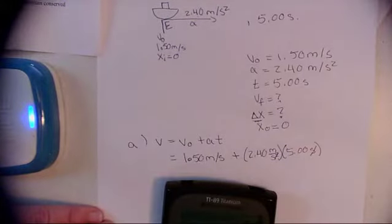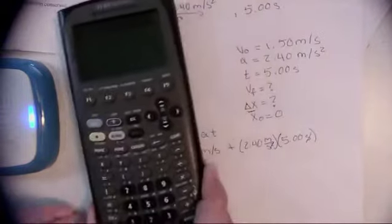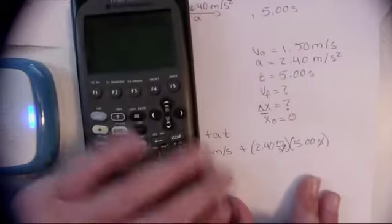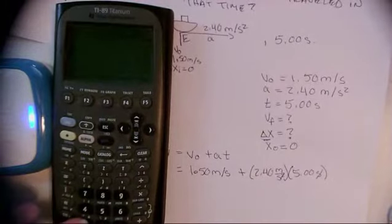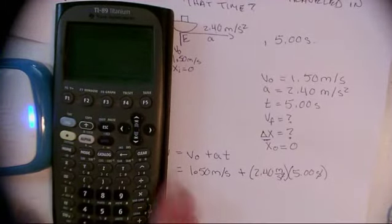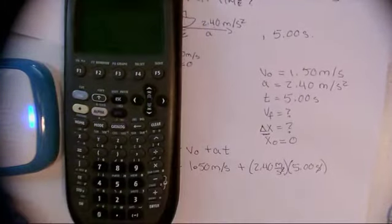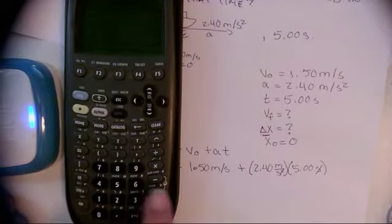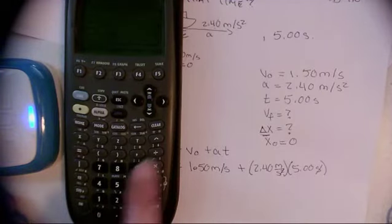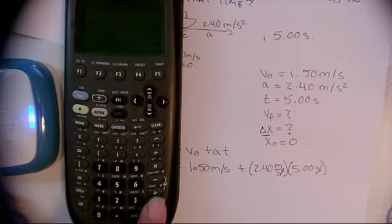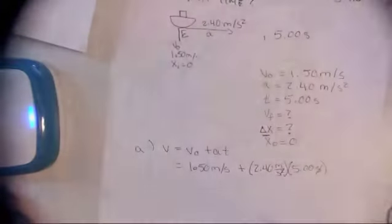So let's do this in one step on the calculator. Clear. That's where you can hopefully maybe see something. I have 1.5 plus, open a parenthesis, 2.4 times 5. And I get 13.5 meters per second.